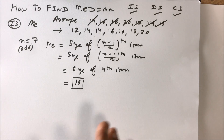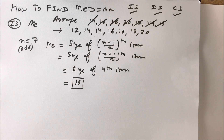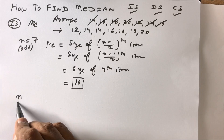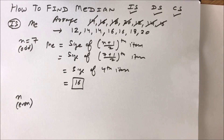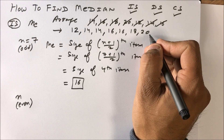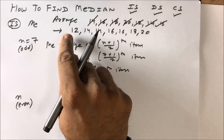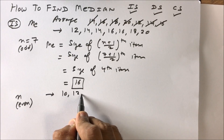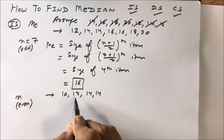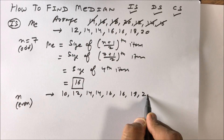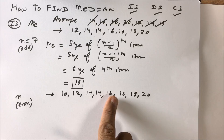In senior classes we apply only this formula, but in junior classes like grades 6 to 10 we can also apply a separate formula when n is even. Let's look at an example — if we add one number, say 10, the series becomes: 10, 12, 14, 14, 14, 14, 16, 16, 18, 20.